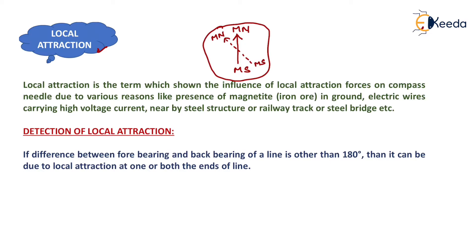Now local attraction is the term which shows the influence of local attraction forces on compass needle due to various reasons like presence of magnetite, that is iron ore in ground, electric wires carrying high voltage current, nearby steel structure or railway track or steel bridge, etc.